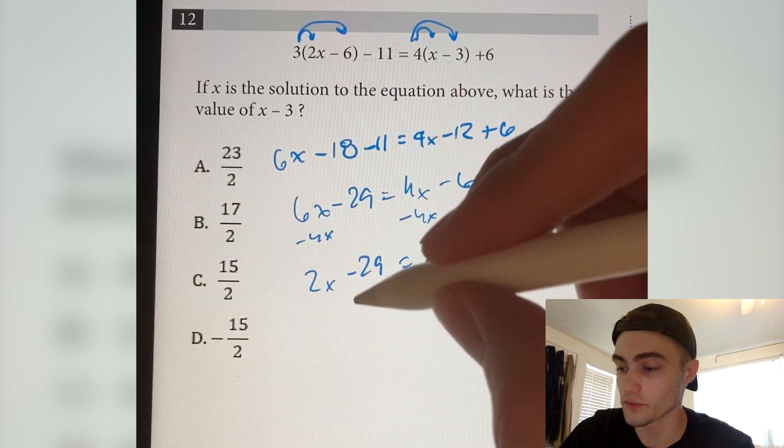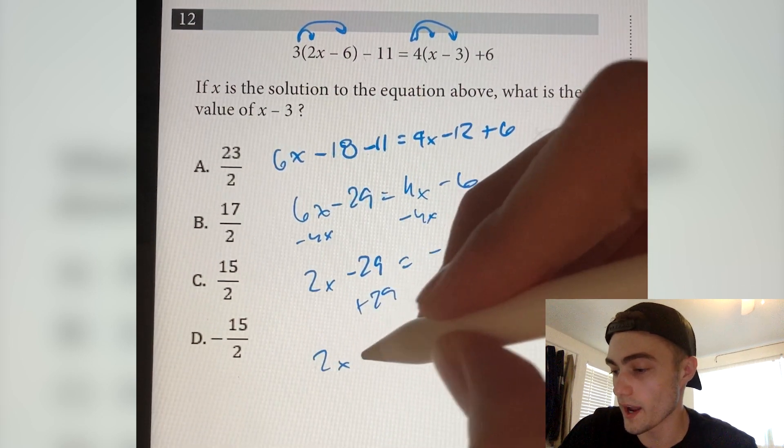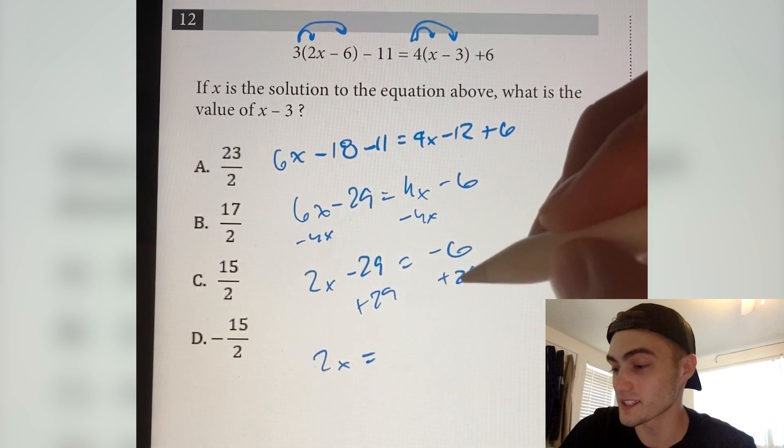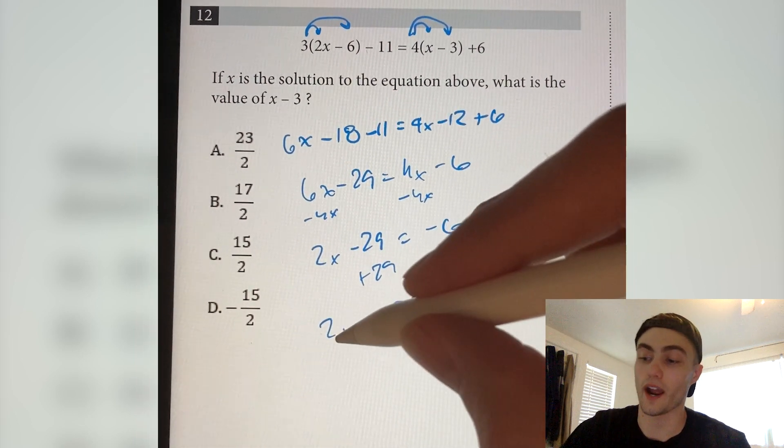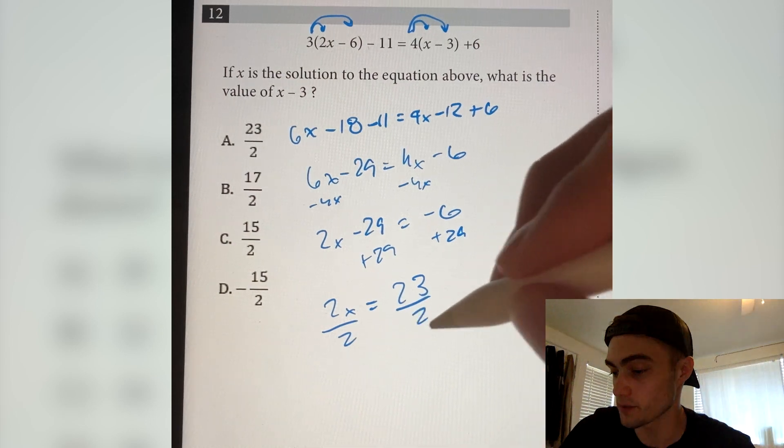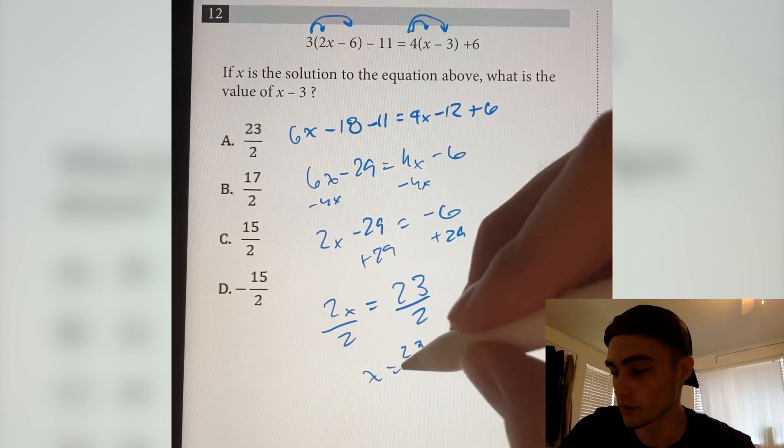And I want x by itself, so I'm going to add 29 to both sides. So now we have 2x equals minus 6 plus 29, that's 23. So now I have 2x equals 23. If I divide both sides by 2, I get x is equal to 23 over 2.